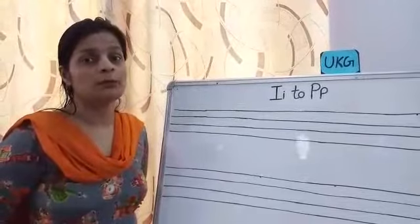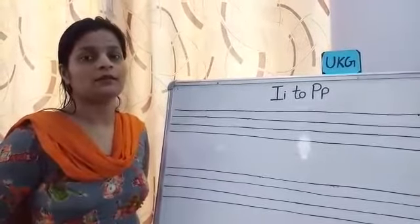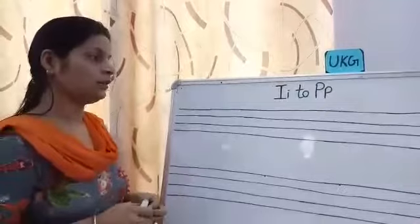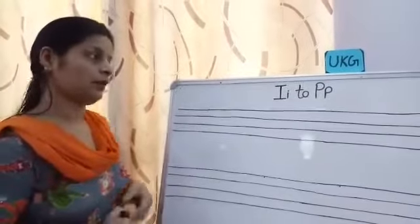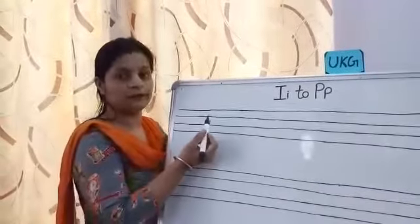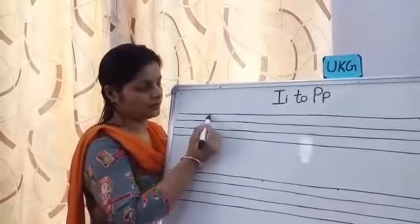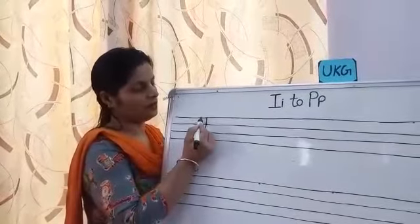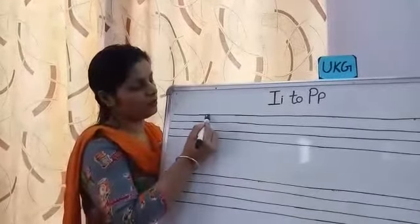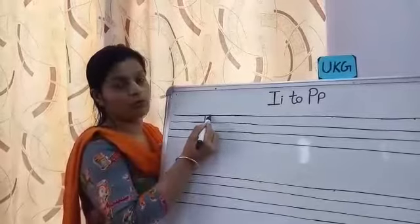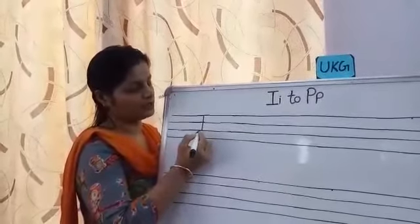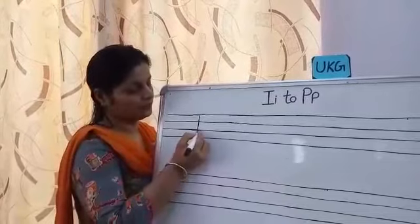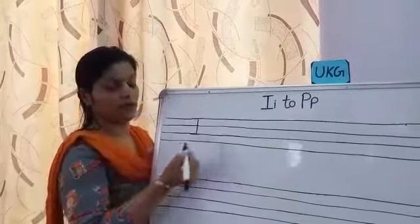For capital letter I, ink: we use the upper three lines. We will draw a standing line, then one slanting line on the top red line and one slanting line on the third blue line.